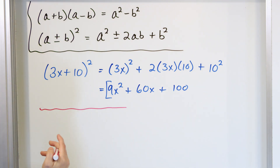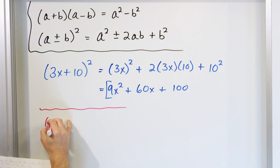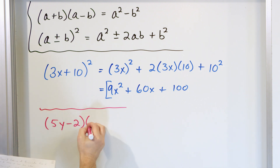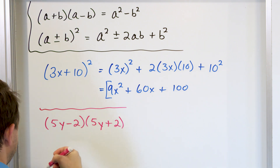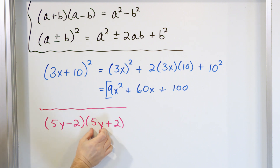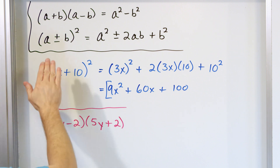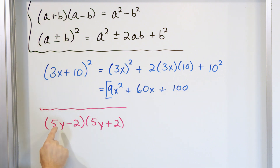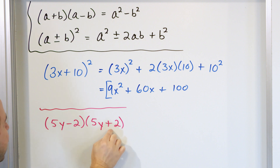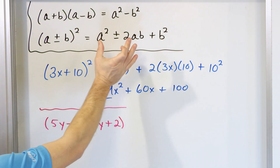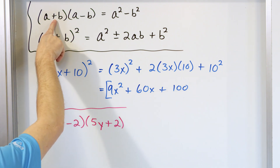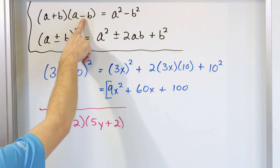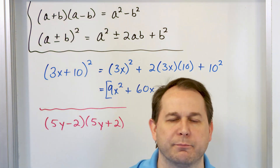What if we have (5y - 2)(5y + 2)? We notice the first terms are the same, the last terms are the same, and we have one plus and one minus. Notice the way it's written here is (a - b)(a + b), but we have (a + b)(a - b) — the answer will be the same either way. It doesn't matter because when you multiply anything together, two times three equals three times two. You can flip the order of multiplication.